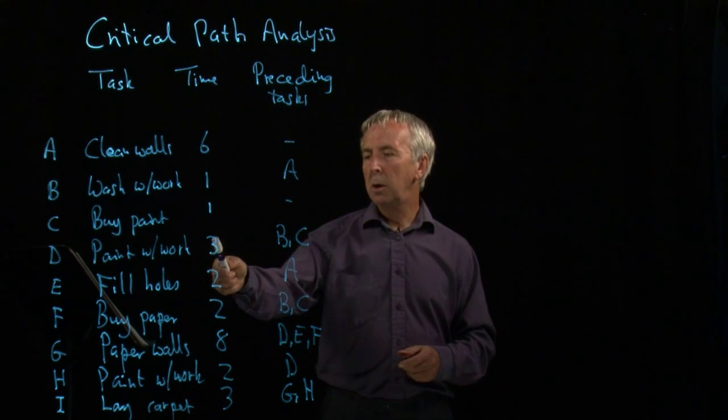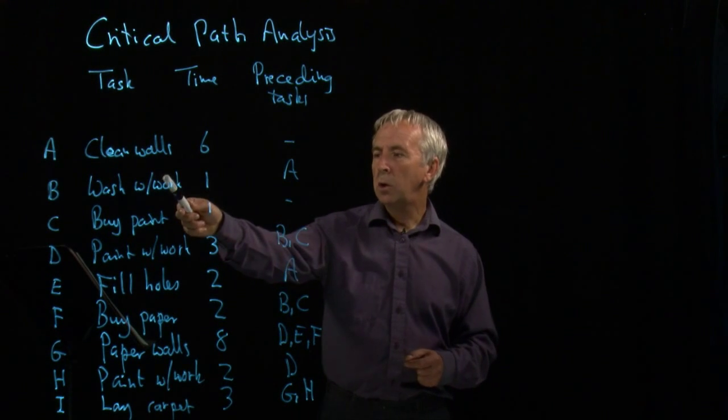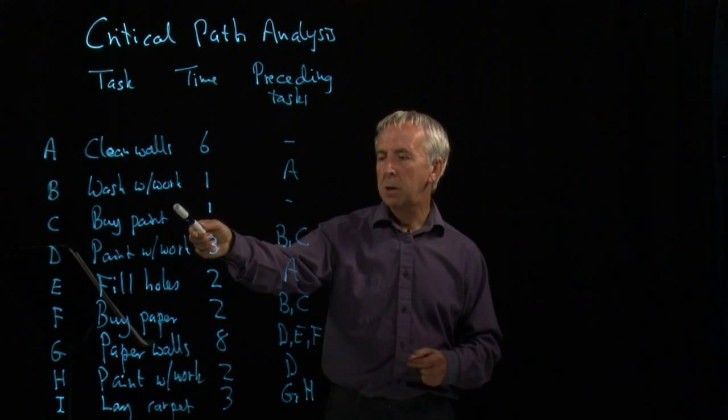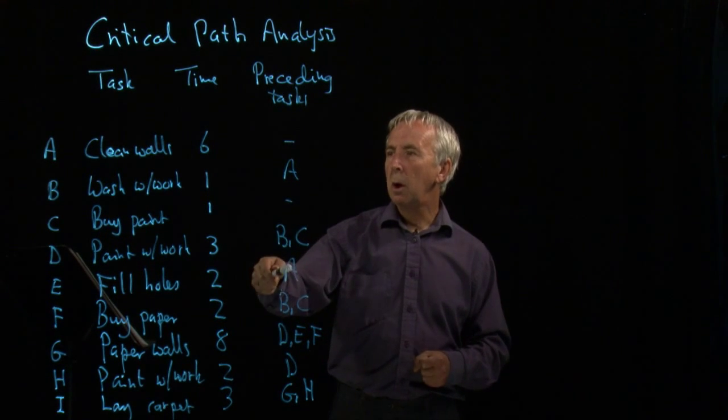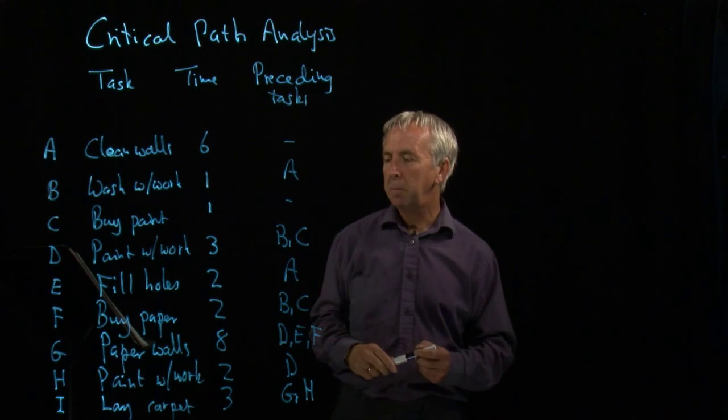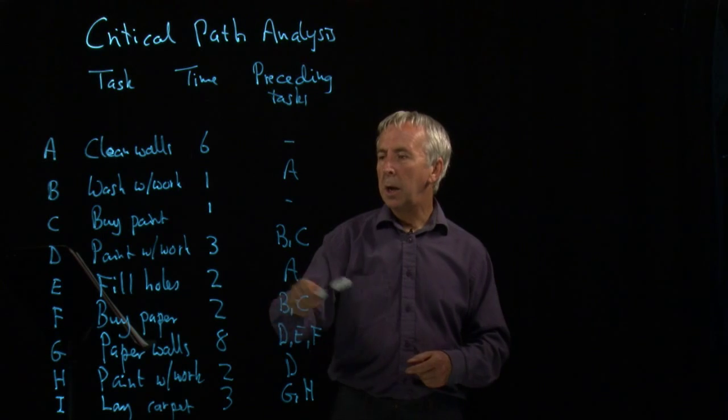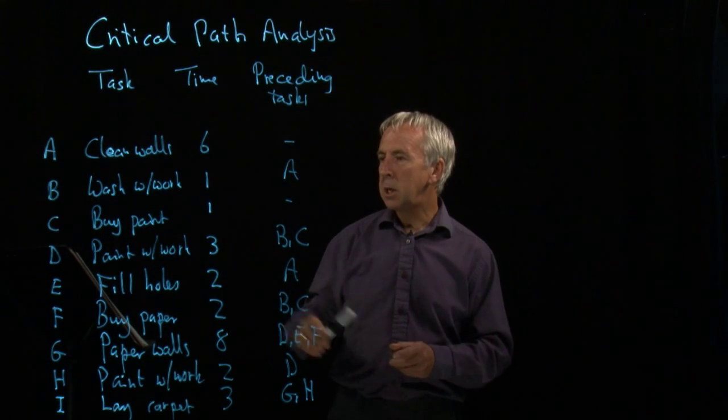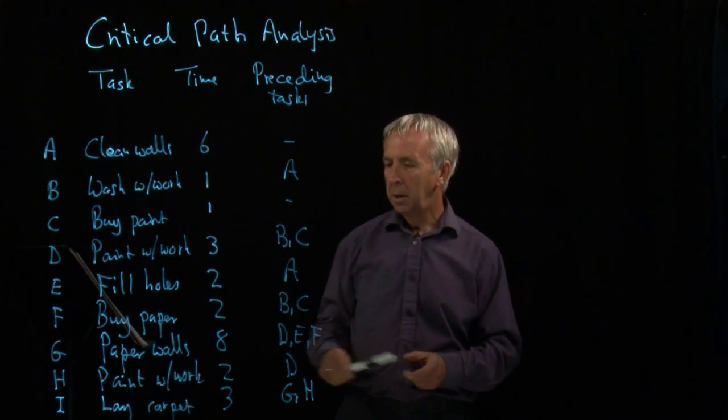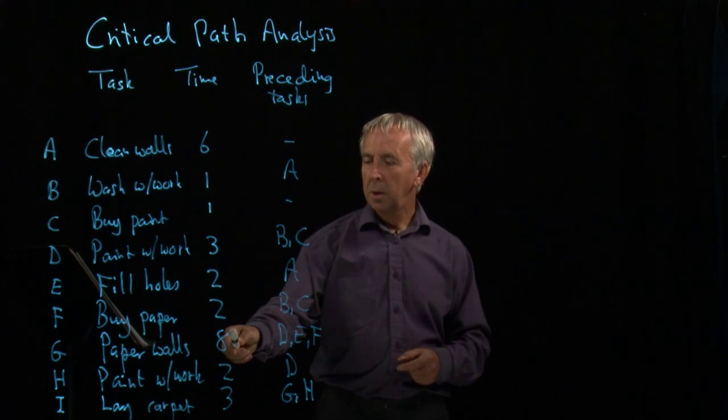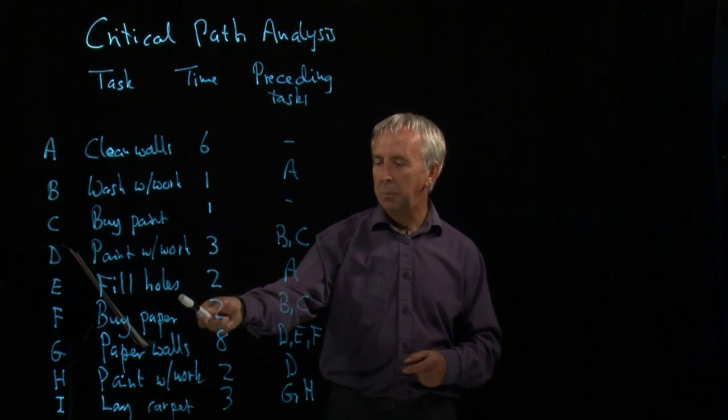Then we want to paint the woodwork, taking three hours. And in order to do that, we must have washed the woodwork and bought the paint. We need to fill the holes in the walls, which we can't do until we've cleaned them. So that needs predecessor A. We need to buy the wallpaper, which needs to be preceded by B and C, once we've got the paint sorted out and the colour. We then need to paint the walls. So we've got to have painted the woodwork, filled the holes and bought the paper.